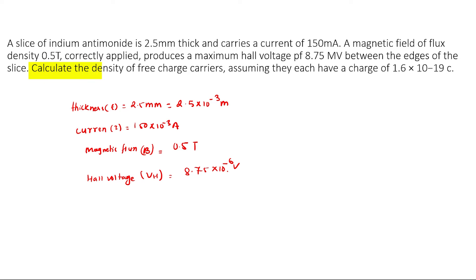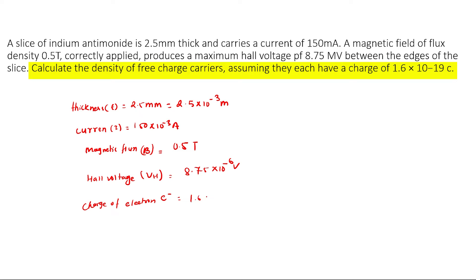Calculate the density of free electrons, assuming they each carry a charge equal to the charge of an electron: 1.6 × 10⁻¹⁹ coulombs. Calculate the density of free electrons.